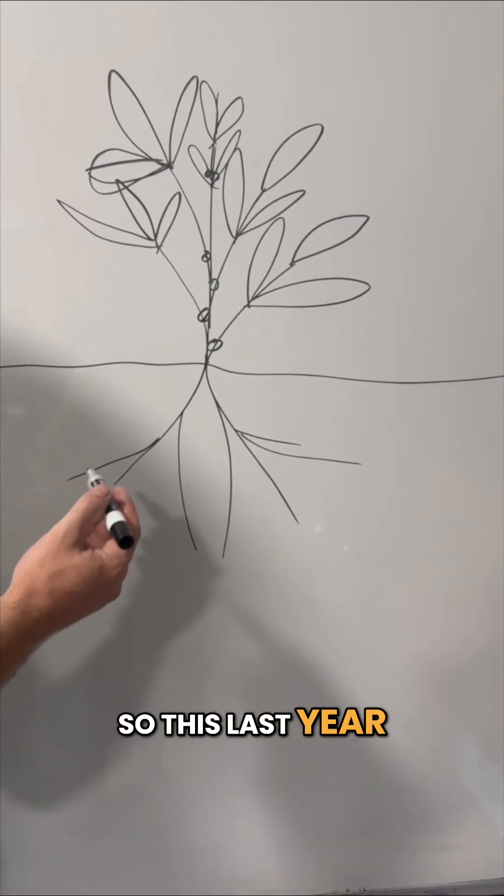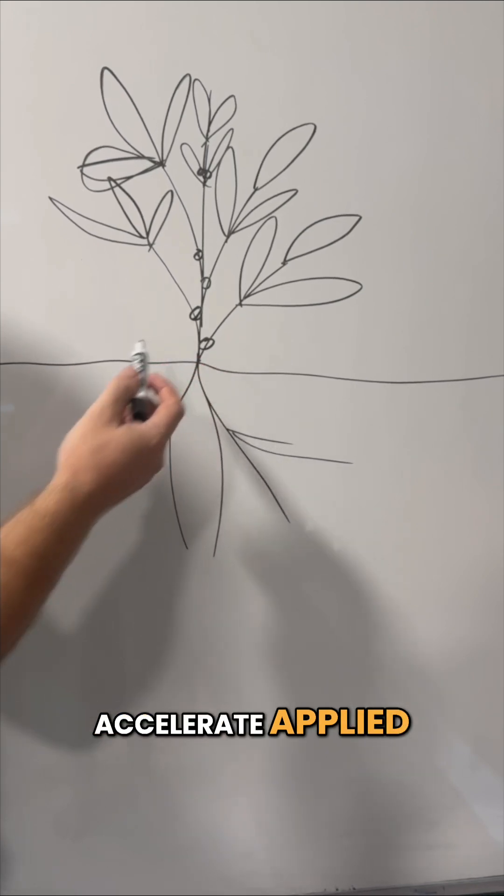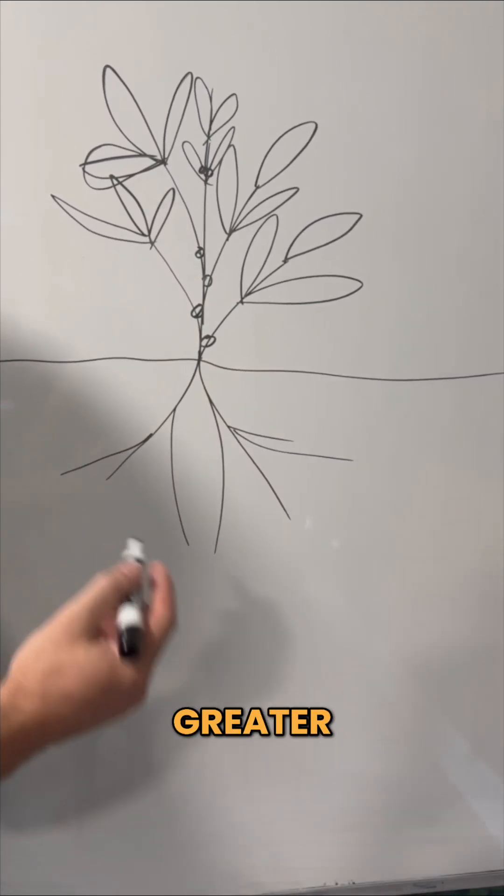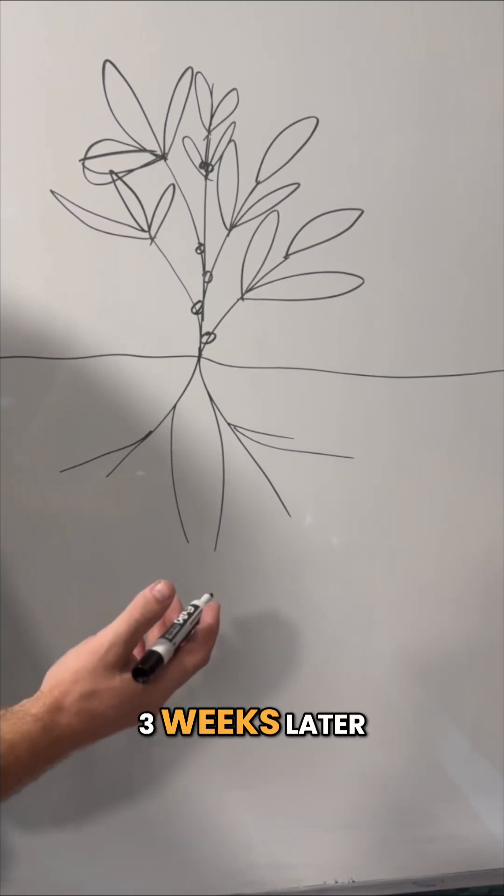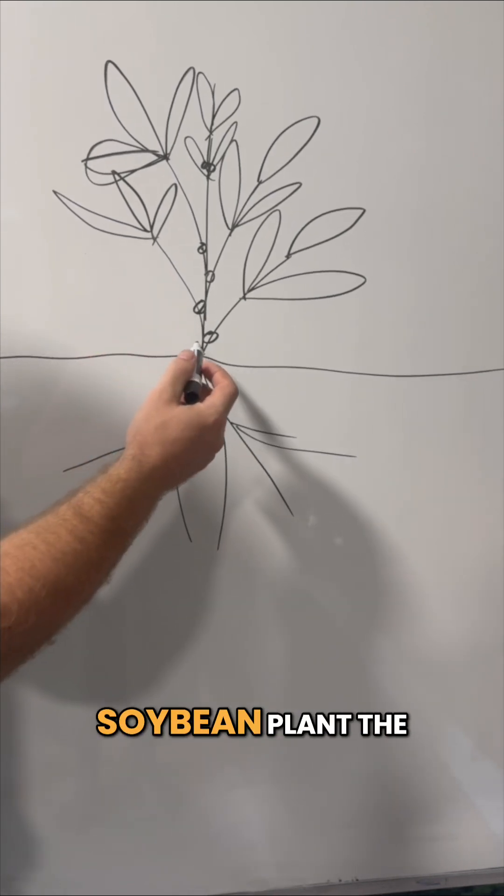So this last year, we had this experience on cotton where two quarts of Accelerate applied early, like 21 days post germination, produced a much greater crop response than eight quarts of Accelerate applied three weeks later. And this same phenomenon also holds true of the soybean plant.